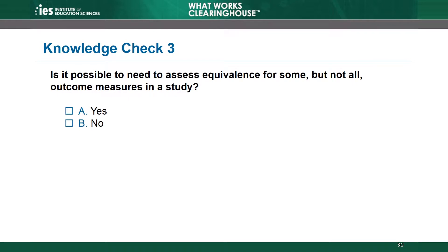Knowledge check 3. Is it possible to need to assess equivalence for some, but not all, outcome measures in a study? Yes or no? The correct answer is yes. It is possible to need to assess baseline equivalence for only some outcome measures. In an RCT, attrition may differ by outcome measure, so some outcome measures may have high attrition and others may have low attrition. The study would only need to demonstrate baseline equivalence for the outcomes with high attrition.